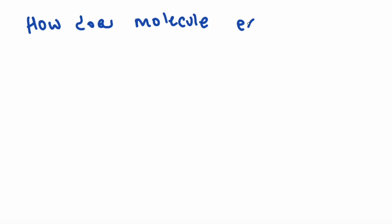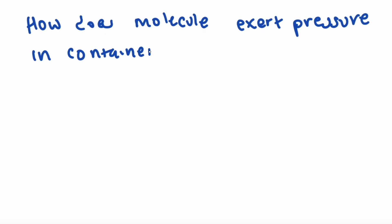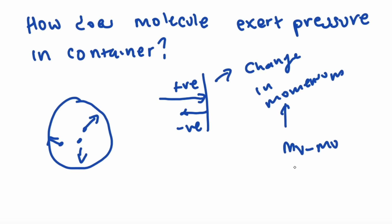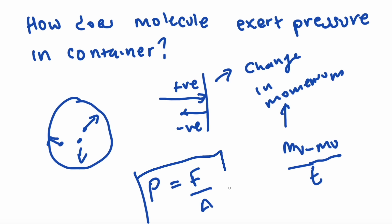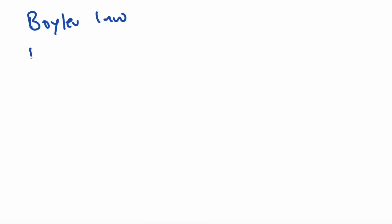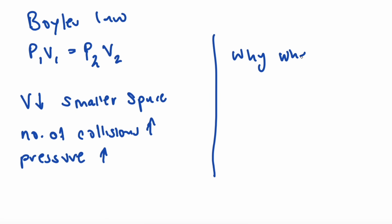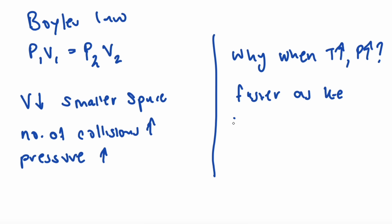How does a molecule exert pressure in a container? If we have a molecule in a container, it will hit the walls. The momentum could be positive or negative. The change in momentum, which is MV minus MU over T, will then result in the change in pressure. Boyle's law states P1V1 equals P2V2. When volume decreases, there is smaller space, resulting in more collisions, and the pressure increases. When temperature increases, the pressure increases because molecules move faster as kinetic energy increases, the number of collisions increases, and so pressure increases.